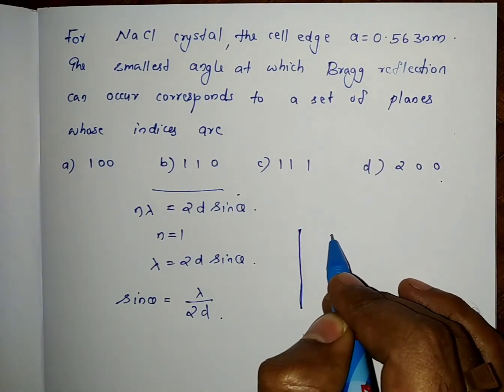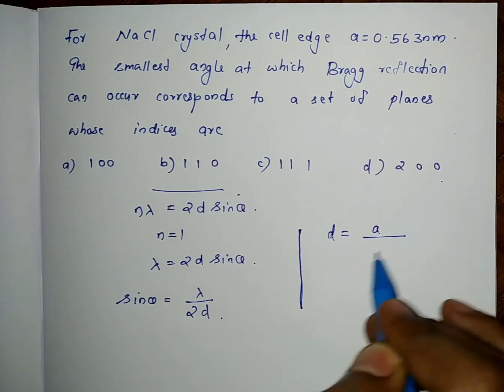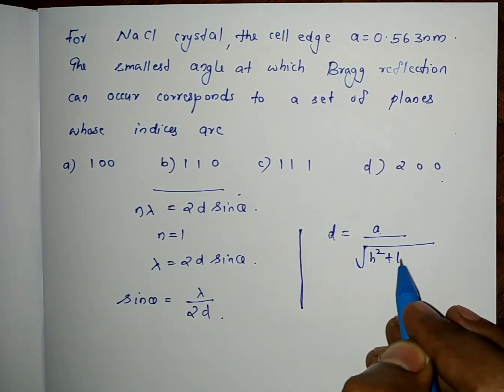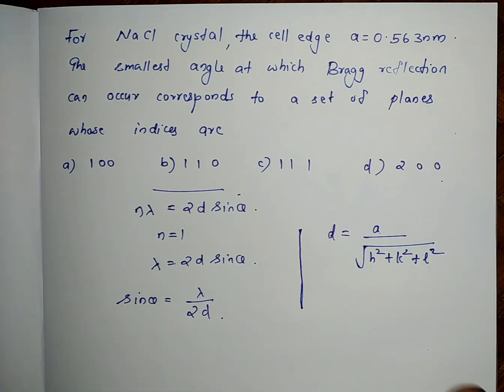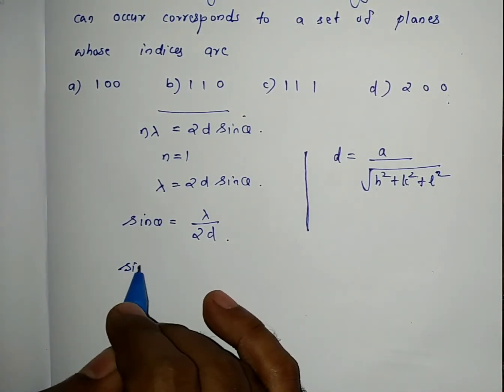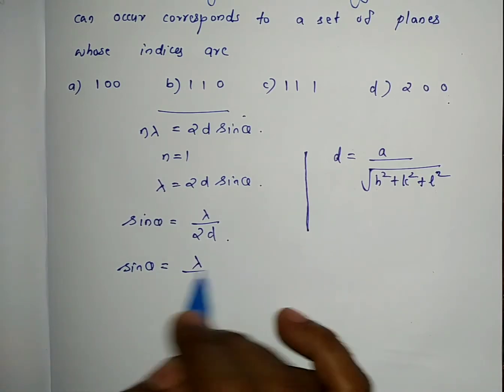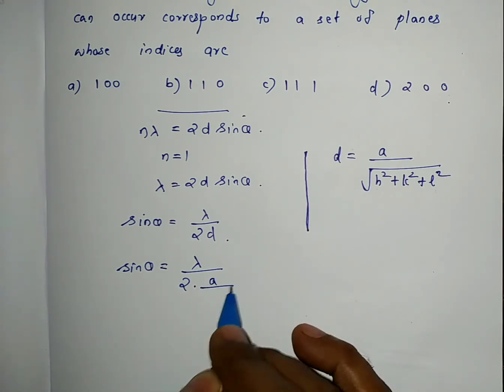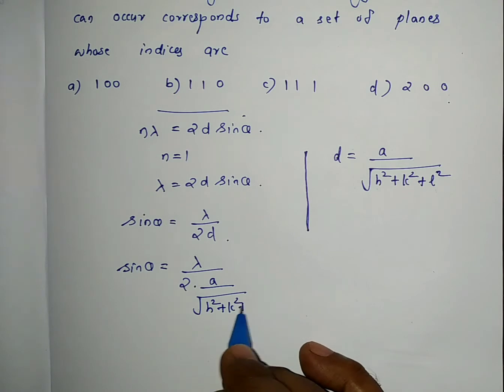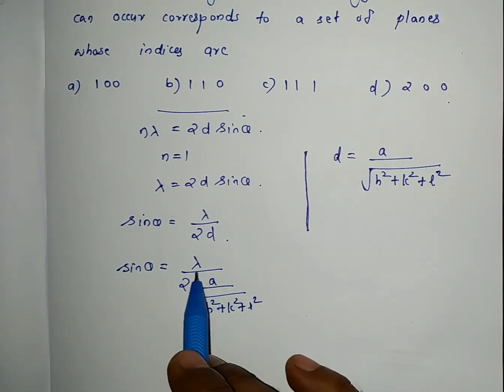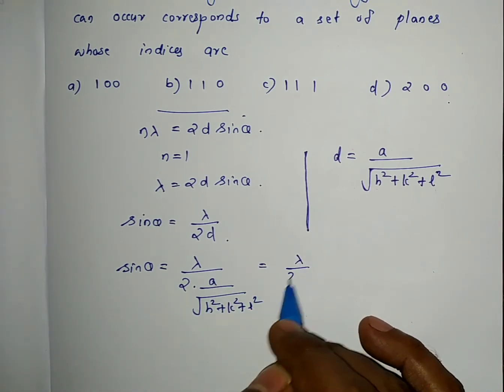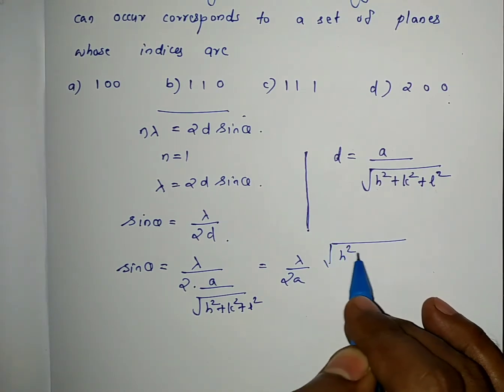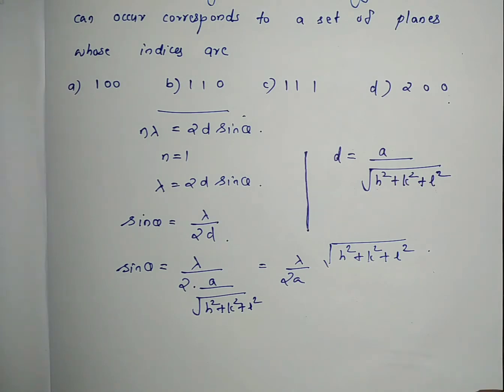The equation is d equals a divided by the square root of h² plus k² plus l², where h, k, l are Miller indices. Substituting this, sin θ equals λ over 2a times the square root of h² plus k² plus l².